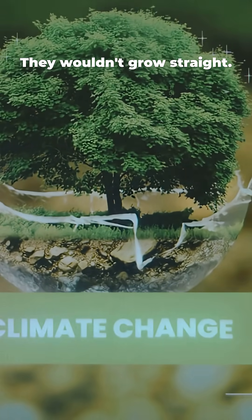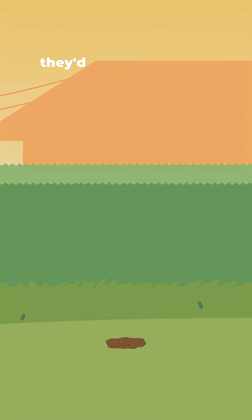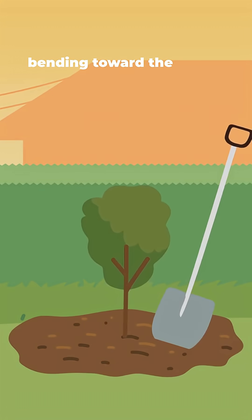Trees? They wouldn't grow straight. On most of the planet, they'd grow diagonally, bending toward the center like they're being pulled by an invisible force.